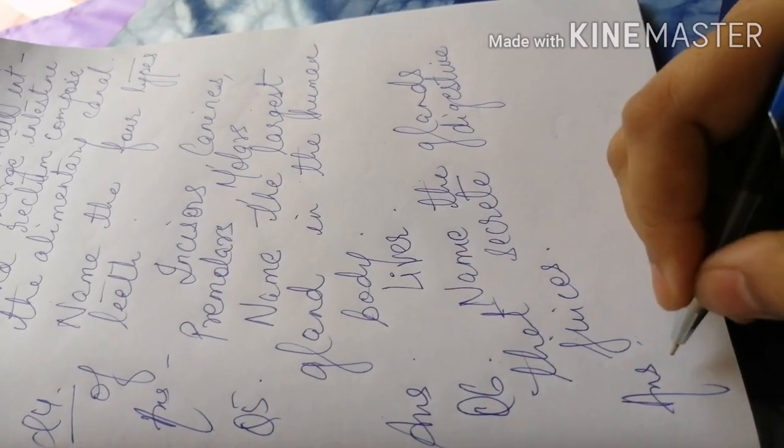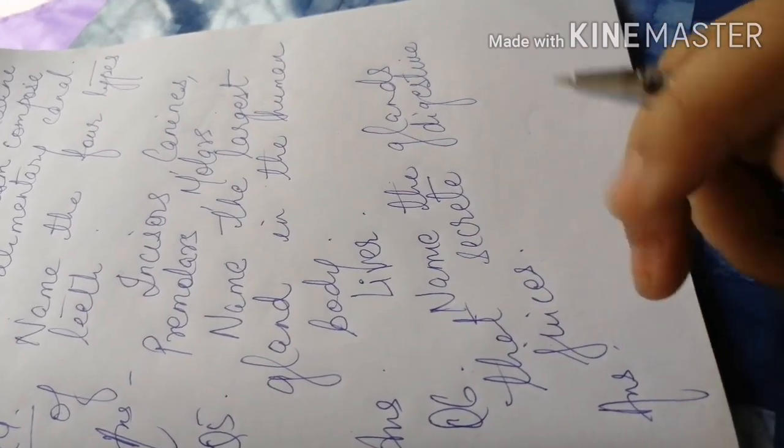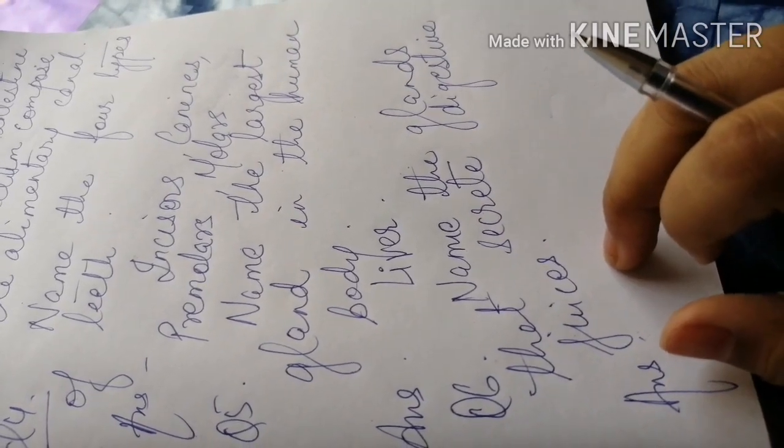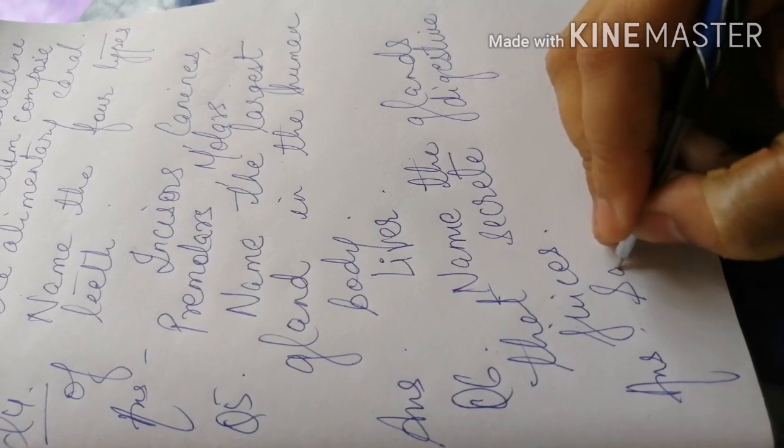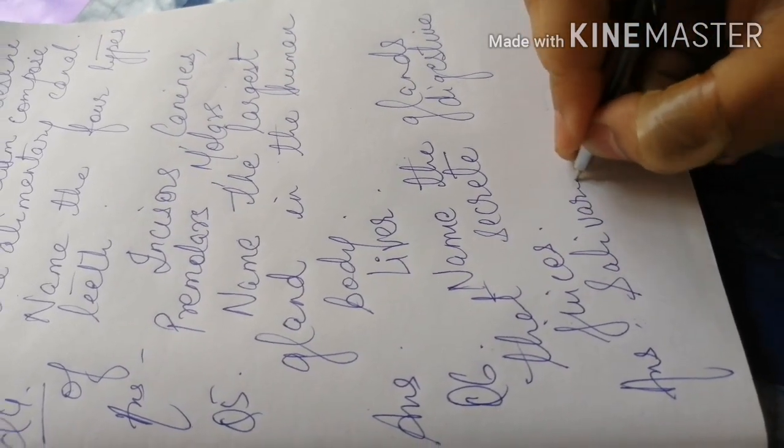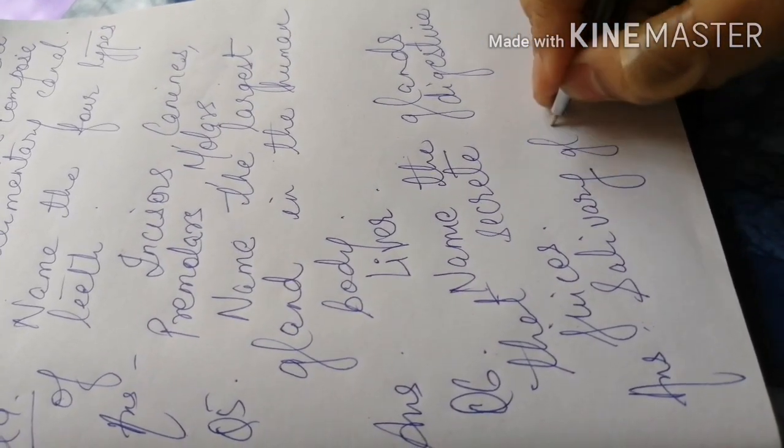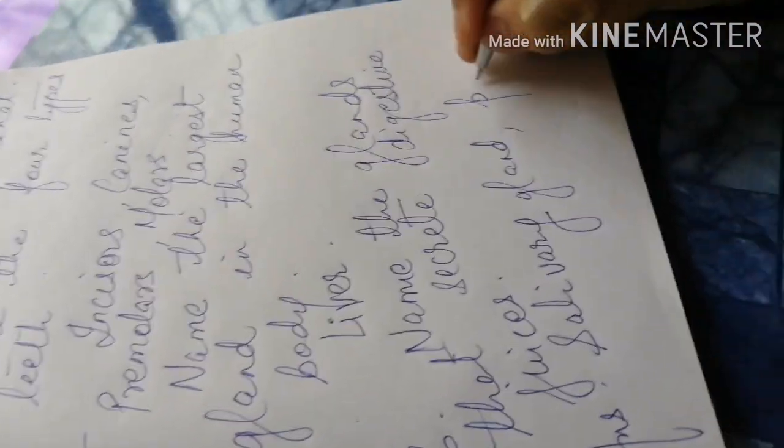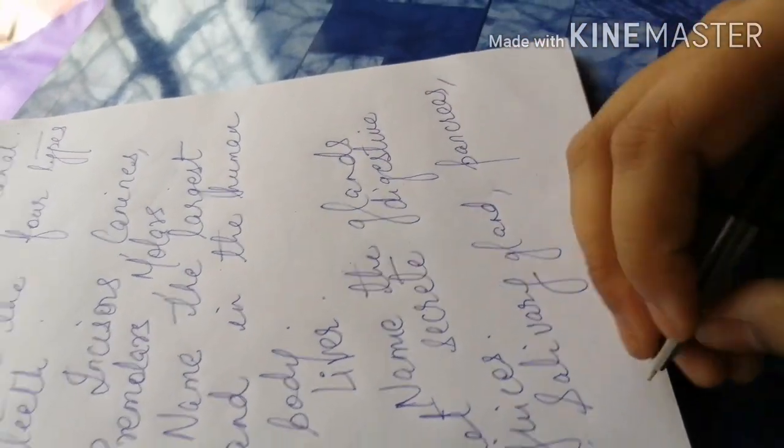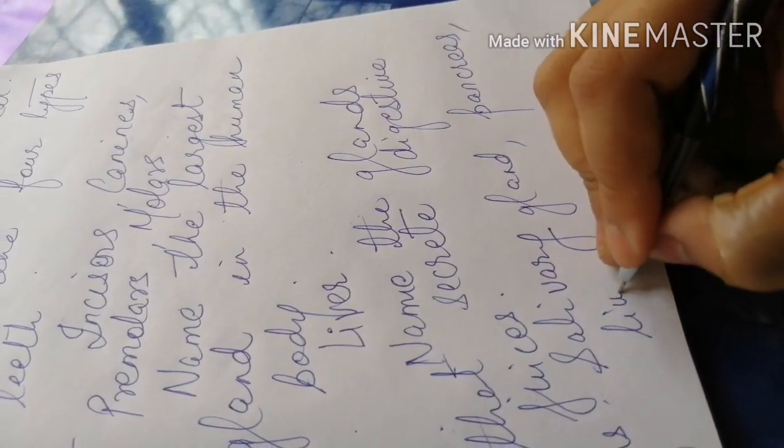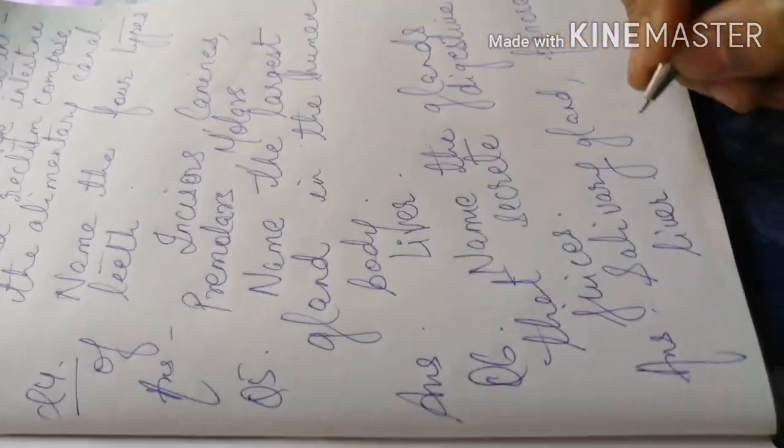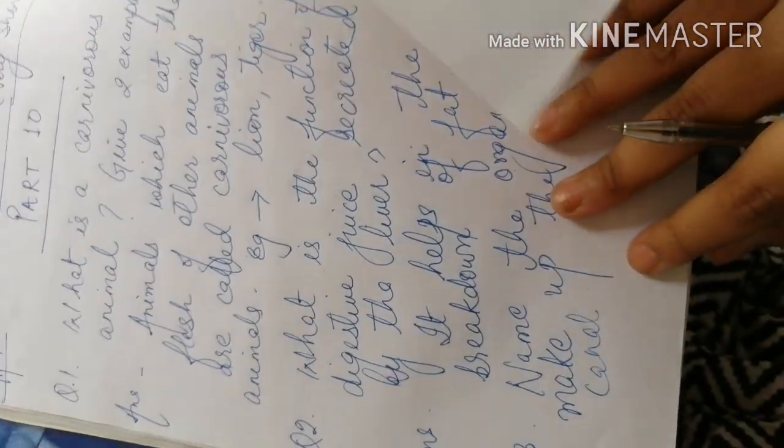I taught you all about the three glands which are present in human body. First was the salivary gland that was present in the mouth. Then second was your pancreas which secreted pancreatic juice, and the third was your liver which secreted bile juice.